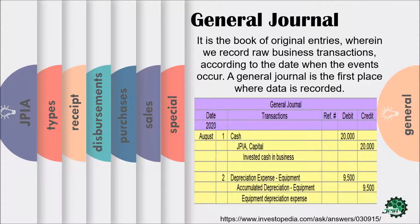In this given picture, it shows how the general journal is prepared. First, the header — general journal — followed by the date, the transactions or particulars, the reference number or the folio number, then the debits and the credits. In the first column, you can see the date is followed by the year, then the month, and the day of the transactions. In the transactions column, you will record the appropriate account titles and its description. For the reference number or the folio number, it is where the account number of the respective account titles are recorded, as seen in the chart of accounts. The amounts for the transactions are recorded in the debits and the credits.